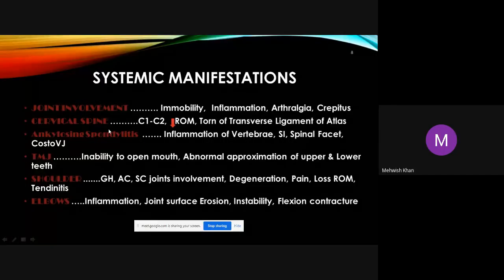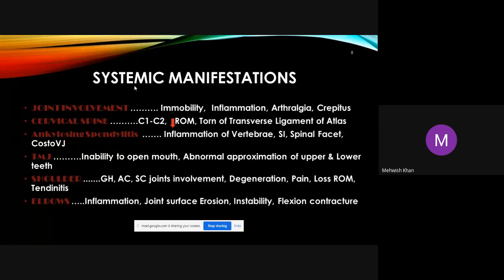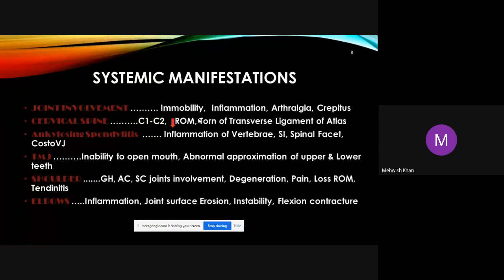The cervical spine is also affected in RA, particularly C1 and C2, which is potentially dangerous. Involvement of C1–C2 may affect surrounding ligaments and is a serious stage requiring prompt, careful management. Range of motion decreases due to immobility and pain.